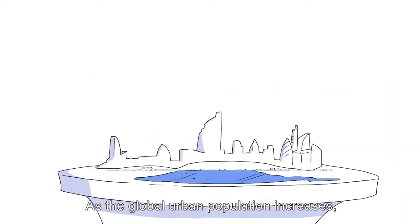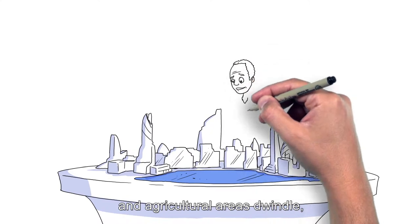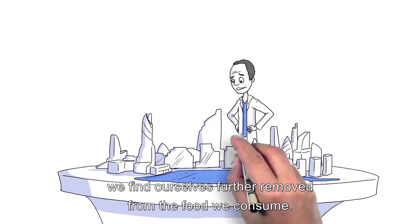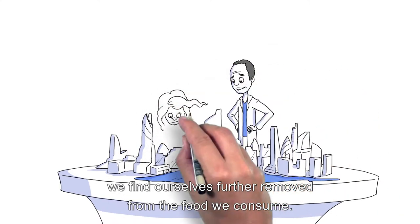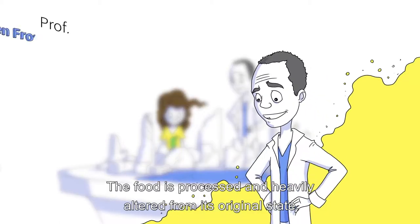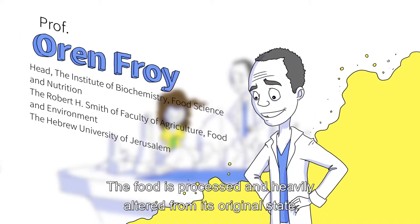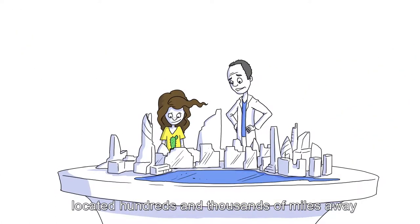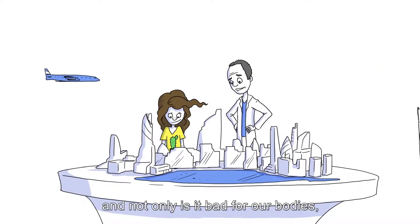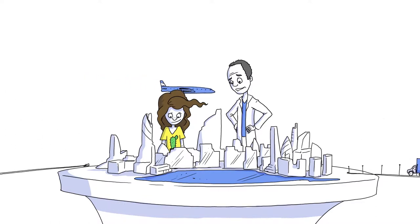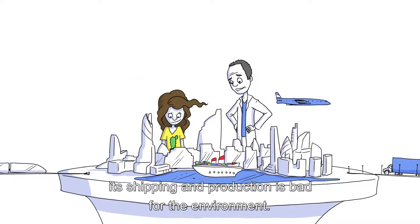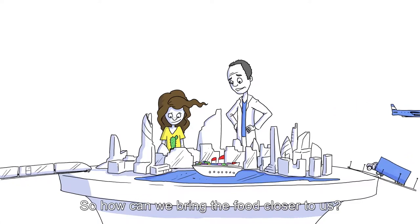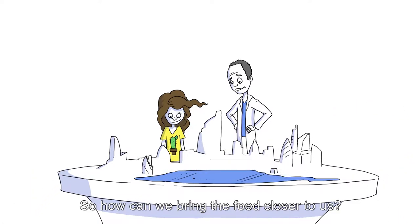As the global urban population increases and agricultural areas dwindle, we find ourselves further removed from the food we consume. The food is processed and heavily altered from its original state. It comes from fields, plants, and grow farms located hundreds and thousands of miles away. And not only is it bad for our bodies, its shipping and production is bad for the environment. So, how can we bring the food closer to us?